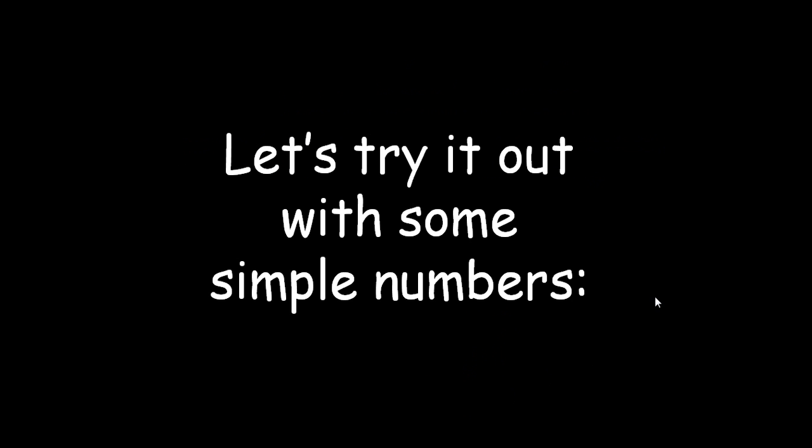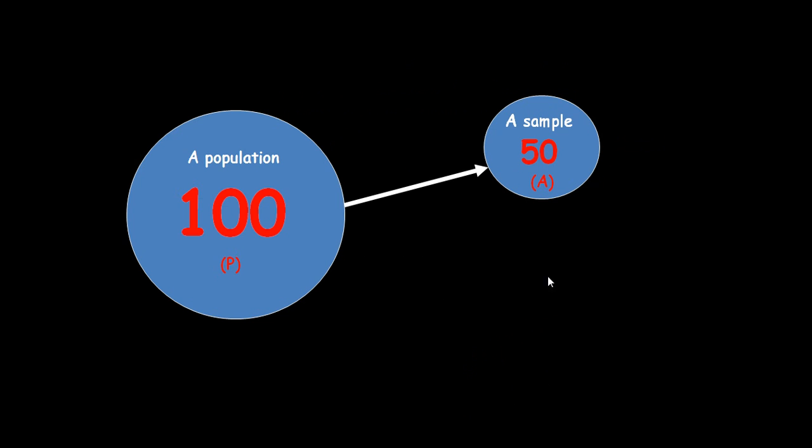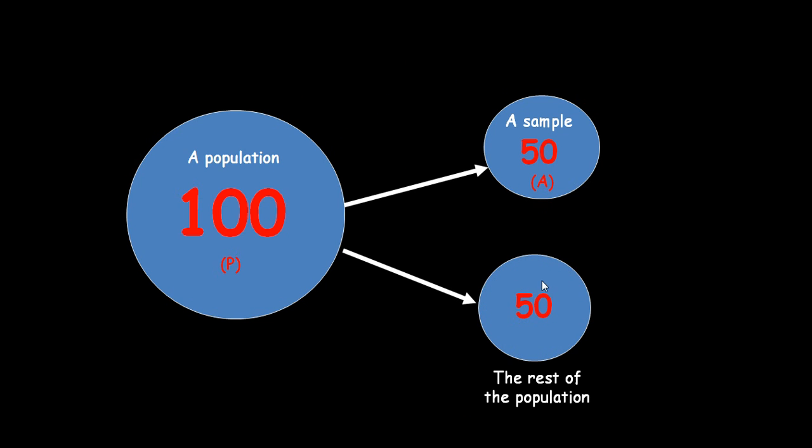Let's look at it with some simple numbers. Here's a population, an imaginary population of 100 individuals. We're going to mark them. Let's take a sample of 50, and we'll mark them. There's the rest of the population. And we'll mark our 50 in the first sample, what I call A in the formula. So I've sprayed them green.